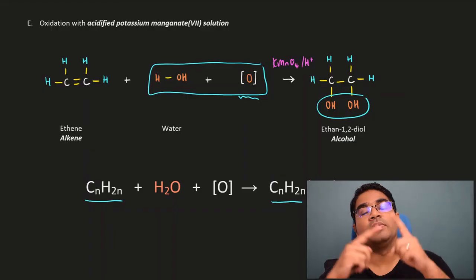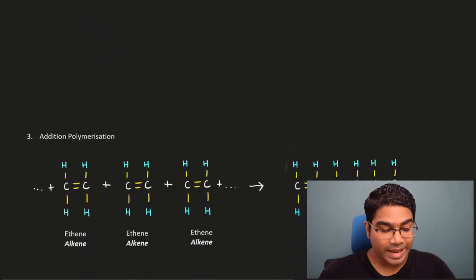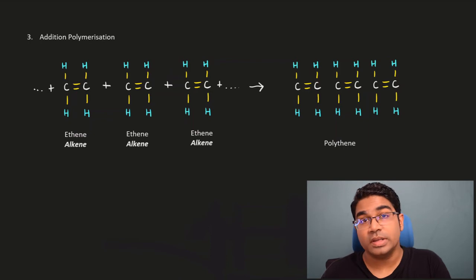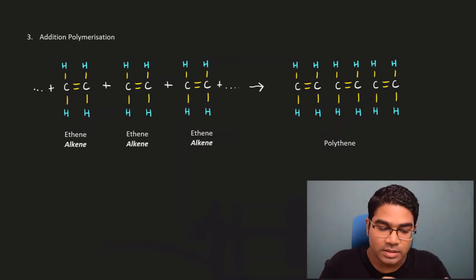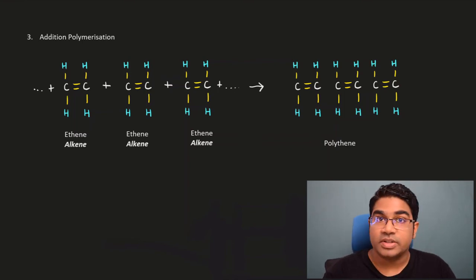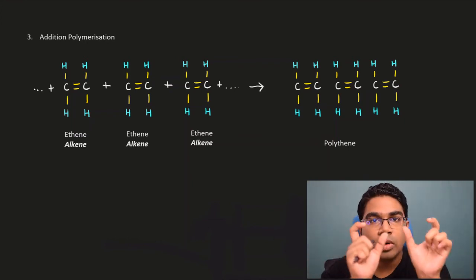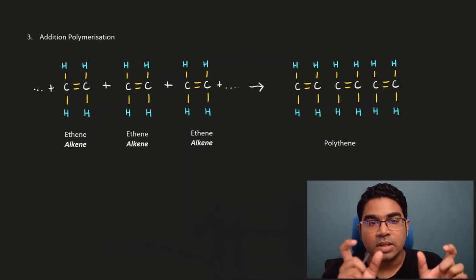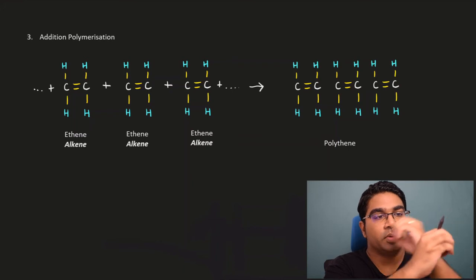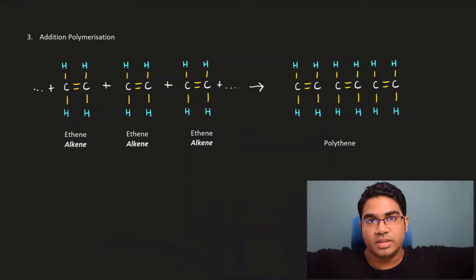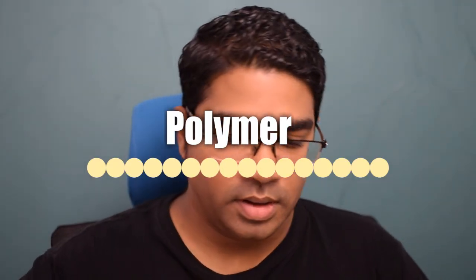We have gone through combustion and the five addition reactions. The third type of reaction is polymerization — specifically, alkenes undergo addition polymerization. We call it addition polymerization because there is also condensation polymerization, but with alkenes it is addition polymerization. Polymerization is the formation of a long-chain molecule from smaller units called monomers. You can imagine it like beads of a chain — each bead is a monomer, and the whole chain is the polymer.